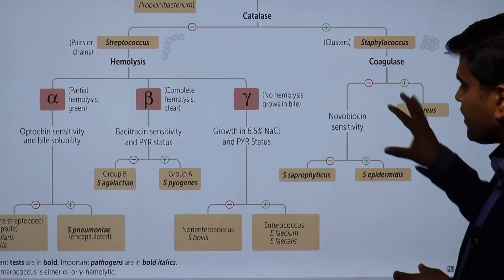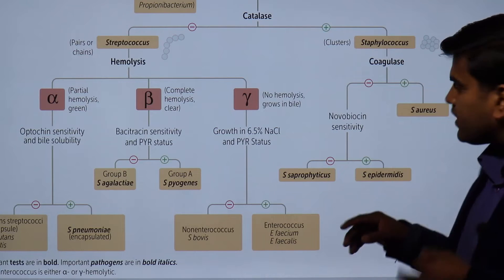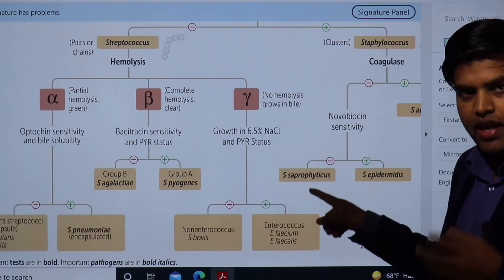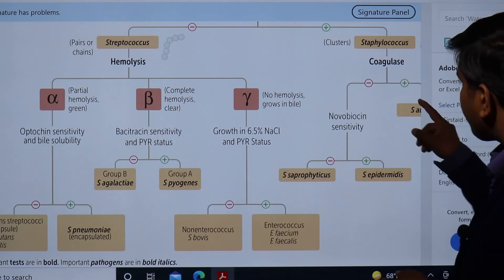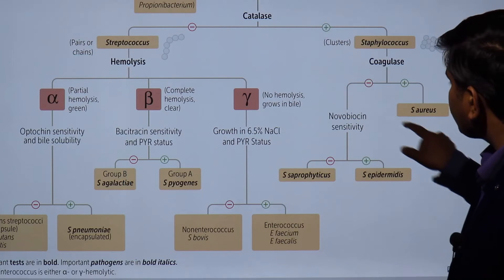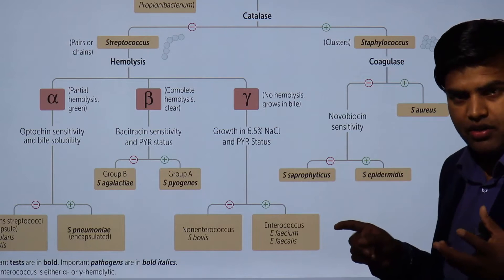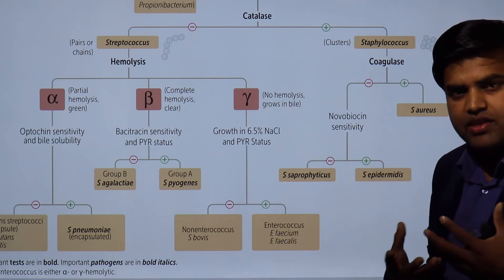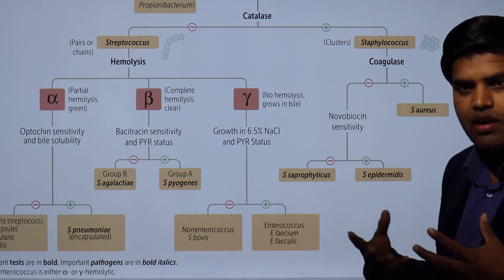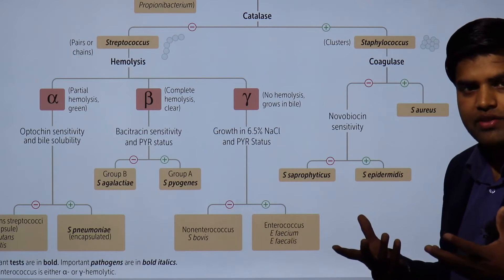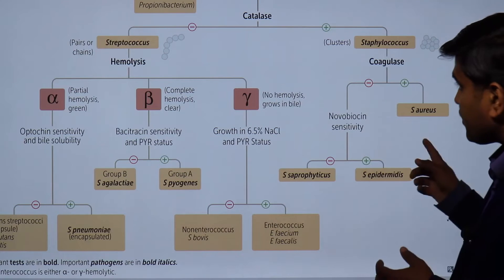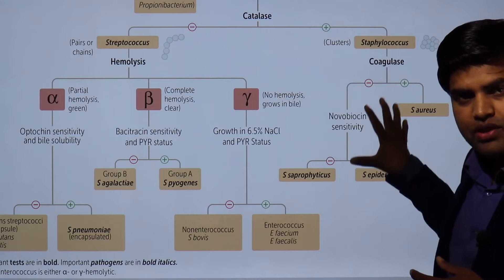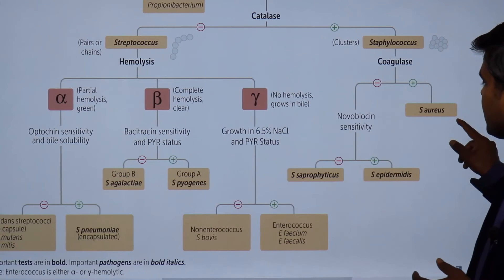Within the Staphylococcus group, there are three major medically important species: Staphylococcus aureus, Staphylococcus epidermidis, and Staphylococcus saprophyticus. Among these, S. aureus is the most medically important — it can cause osteomyelitis, abscess, boils, carbuncle, and heart infections. If gram positive and catalase positive, the organism is in the Staphylococcus group; if coagulase positive, it is specifically S. aureus.